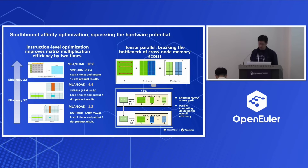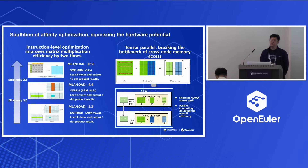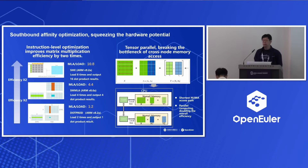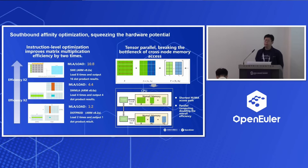Besides that, we also do some work on tensor parallel. For tensor parallel, for a matrix multiply, we split the data and distribute it to different NUMA zones. Then we have parallel tasks to calculate different parts of the matrix. This can actually maximize the memory bandwidth and also maximize the computing capability of the chip and get quite good results.